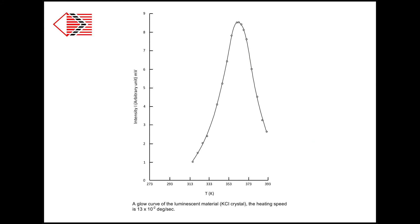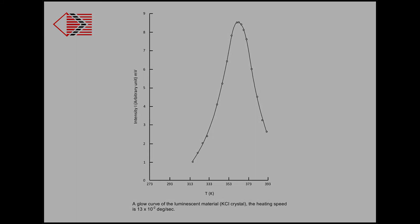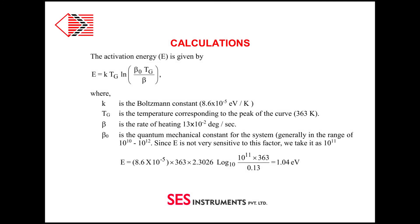The plot of these readings, intensity versus temperature, will give us a glow curve. The glow curve gives us the value of transition temperature Tg. Putting this Tg in formula, we can get activation energy E. Details are given in our user's manual.